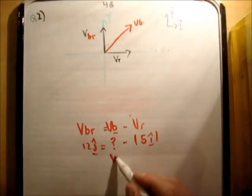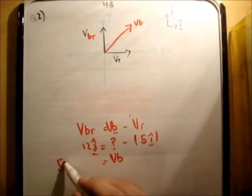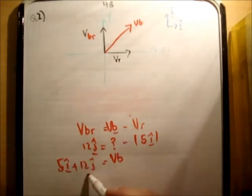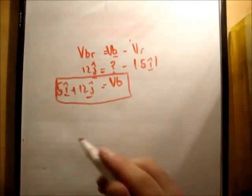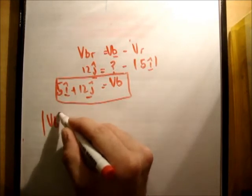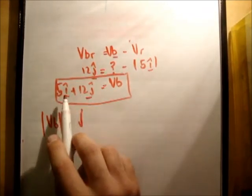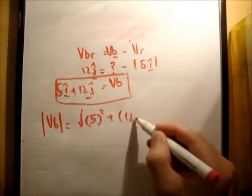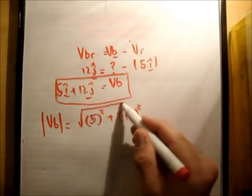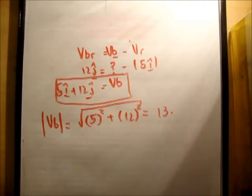Therefore, V, B is equal to 5, i hat plus 12, j hat meters per second. Alright? So we need to get the magnitude of that vector there. So the magnitude of the vector B is equal to the square root, remember this corresponds to a right triangle. So we have 5 squared plus 12 squared, which turns out to be the square root of 169, which turns out to be 13. So that's the magnitude of it.